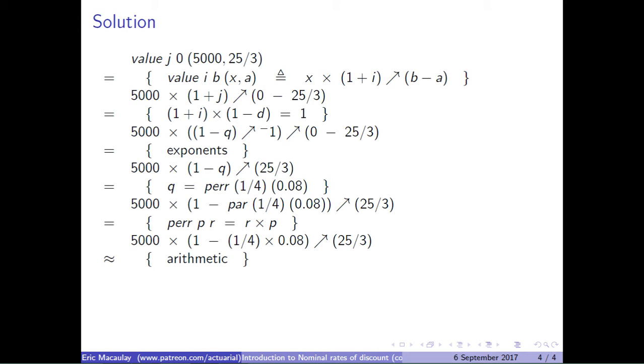And then we have to the power of 25 over 3, that gives us 4,225 over 27. Hence, the present value of 5,000 at 25 over 3 is 4,225 over 27.